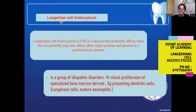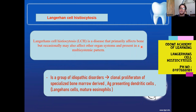What is Langerhans cell histiocytosis? This is a disease that primarily affects the bone and occasionally it could affect other organs too. That means it has both a skeletal and extraskeletal pattern.